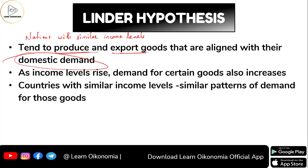So what is it all about domestic demand? Domestic demand means demand which is something internal, or demand from within a nation. So when we talk about citizens, we are considering only those who are residing within the nation — we could say the residents of a nation. So what would be the demand for a product by the residents of a nation? As per this particular theory, nations with similar income levels tend to produce as well as export commodities that are aligned with their domestic demand.